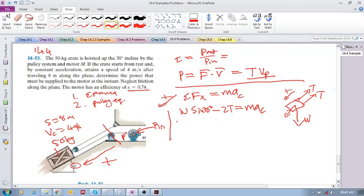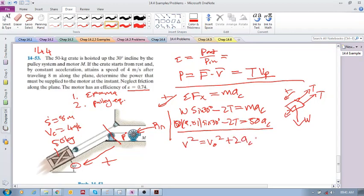This is weight is MG. That's 50 times 9.81 times sine 30 minus 2T is 50 times the acceleration of the crate in the X direction. We've got T as an unknown. We've got acceleration of the crate as an unknown. One thing that we can do now, before we jump into our pulley equations, is we can see that they've given us both the velocity and the displacement of this crate. So, we can jump to our constant acceleration equations.